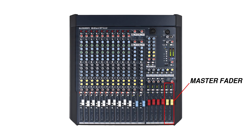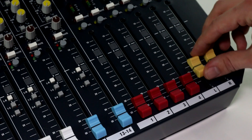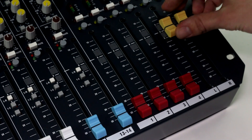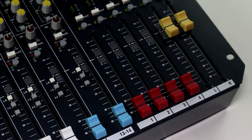Typically there will be a master fader or knob in the bottom right corner of your mixer that controls the overall level that comes out of those main outputs.